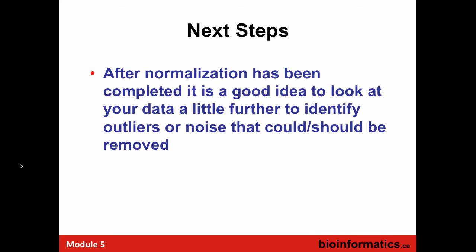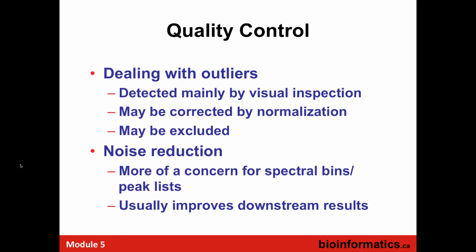After you've done the scaling and normalization, you want to look to see if there's any noise or outliers that are still left. You could potentially do this automatically, but humans are best at understanding and even explaining what's going wrong. Some cases, when you've done a normalization, you've actually made the outliers go away. There are also issues of noise reduction, especially when dealing with spectral bins and peak lists.